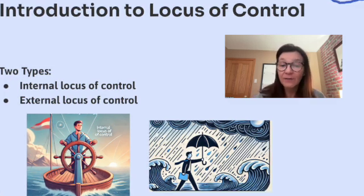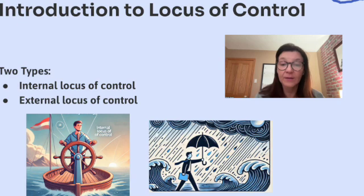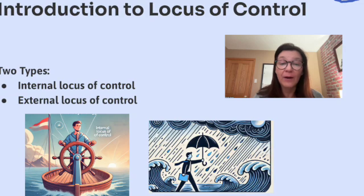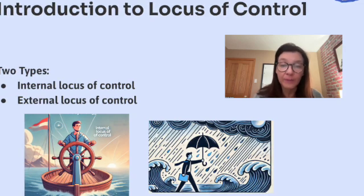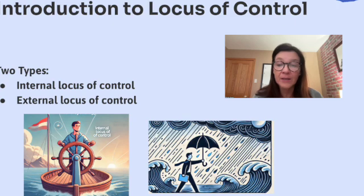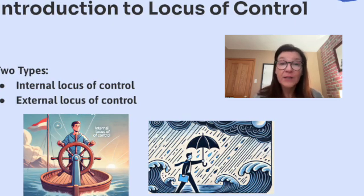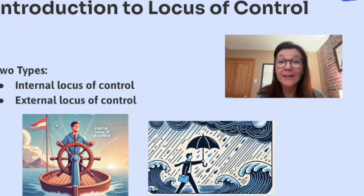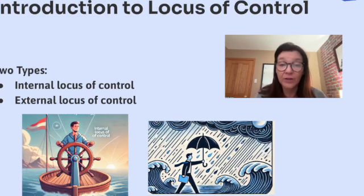How does this affect behavior and mental processes? People with an external locus of control are more likely to attribute outcomes to luck or other people. This mindset can lead to feelings of helplessness or lack of control, especially in difficult situations. It may result in lower motivation and less persistence when facing challenges.